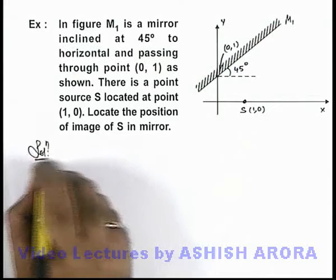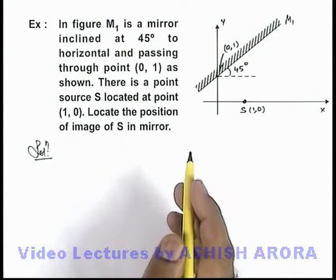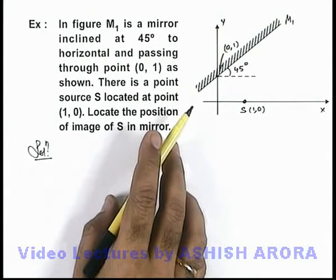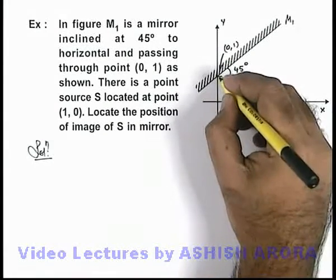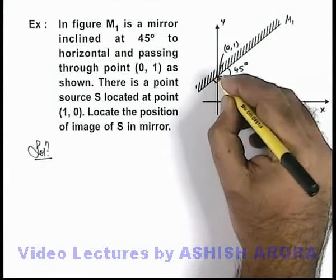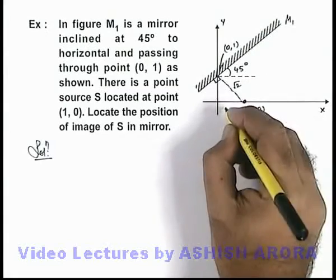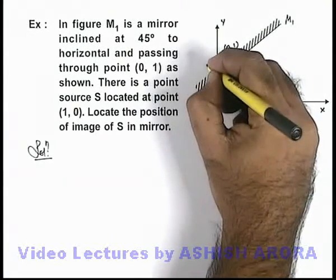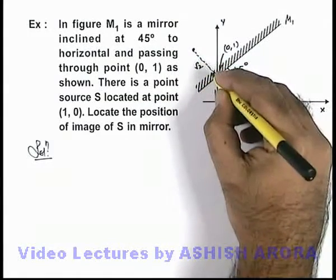In this situation, we know that for every object in a mirror, the image is produced exactly at the same distance behind the mirror as the object is placed in front of it. So here, if we drop a perpendicular from the source to the mirror, this will pass through the point (0, 1). This distance is √2, because both sides are 1 and 1. So the image will be located on this line exactly at a distance √2 behind the mirror, perpendicular to it.